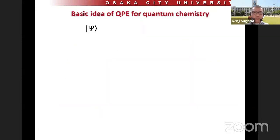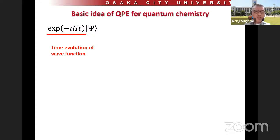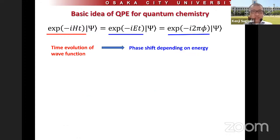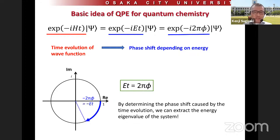The basic idea of quantum phase estimation for quantum chemistry is something like this. Assume we have a wave function which is the eigenfunction of the Hamiltonian, and we apply a time evolution operator. We simulate the time evolution of the wave function, which acquires a phase depending on the energy. We can rewrite this equation using phi, which is the eigenphase of the time evolution operator. This means if we can determine the phase caused by the time evolution, we can extract the energy eigenvalue of the system.